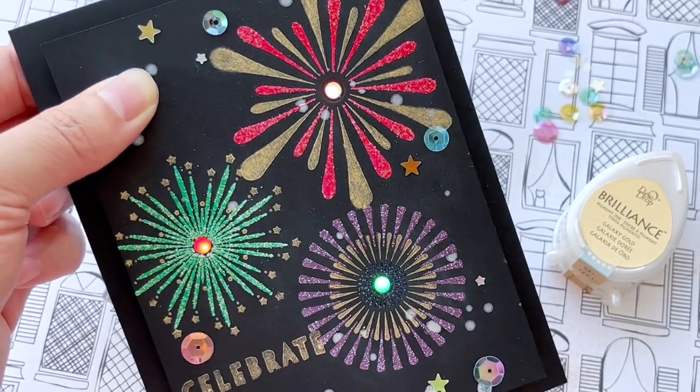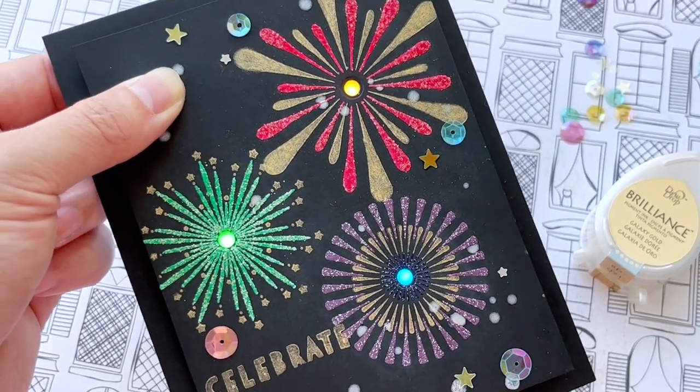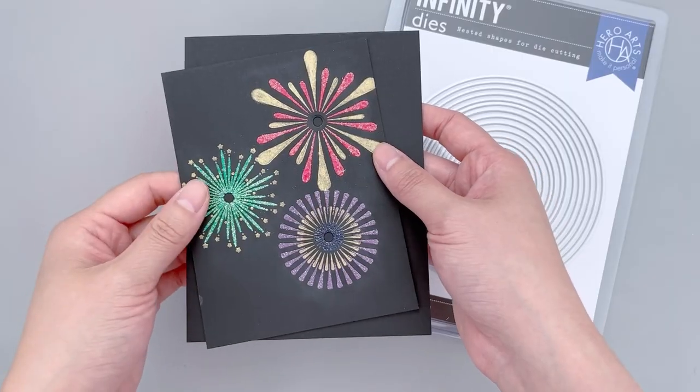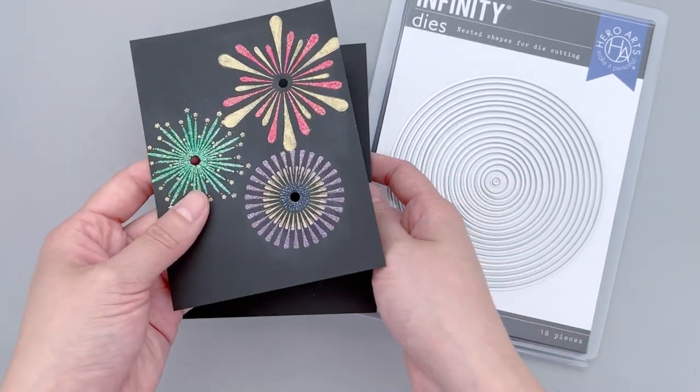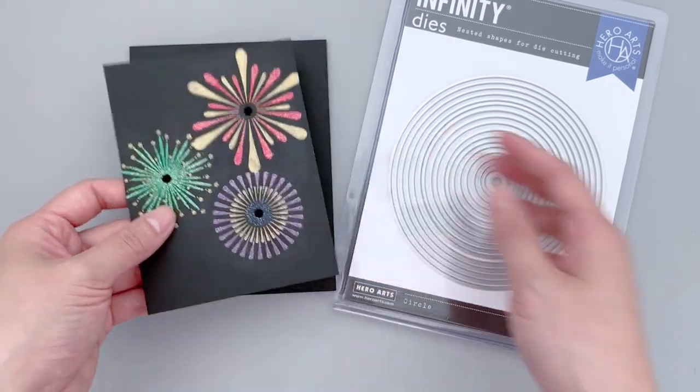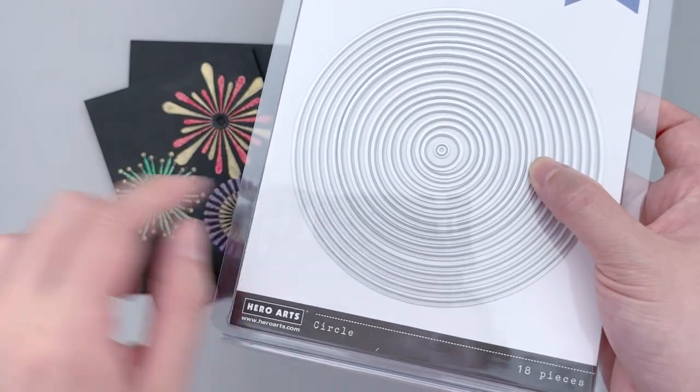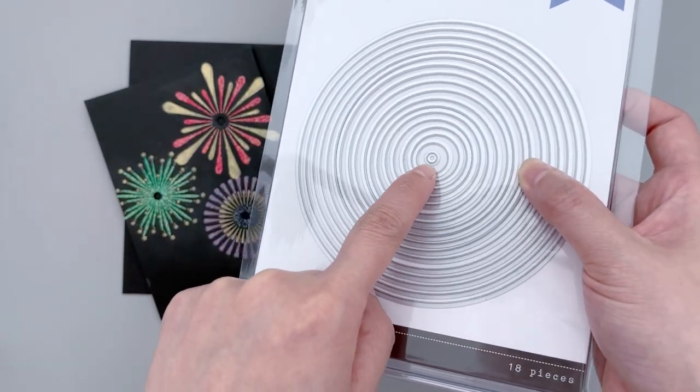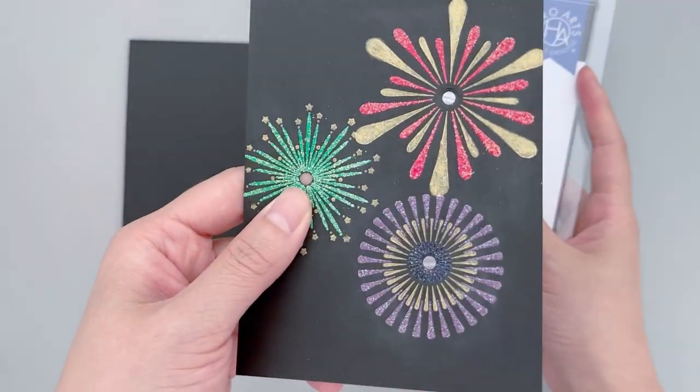For today's project, I also like to try out some of the new LED stickers that I got from Chibitronics. So the next steps would be to create the circuit for this light up card. The first trick would be to die cut small circles at the center of each firework. I'm using the infinity dies from Hero Arts. They just have this tiny, tiny circle die that is the perfect size for today's card.